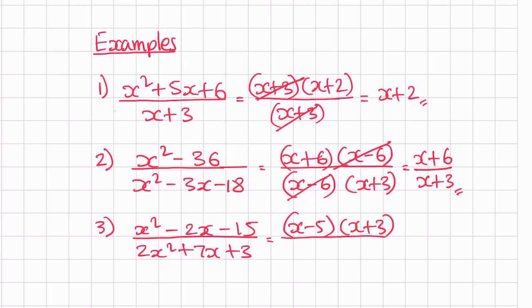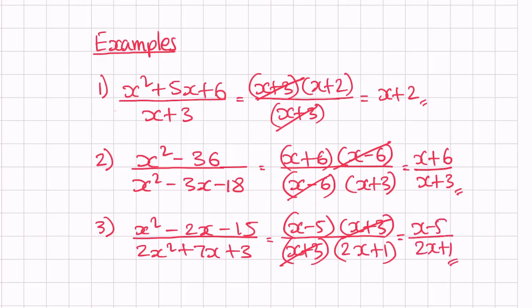That's absolutely fine. On the denominator we have x plus 3 and 2x plus 1. We can cancel out x plus 3, and we'll be left with x minus 5 over 2x plus 1. That's the final answer.